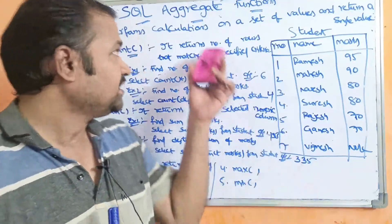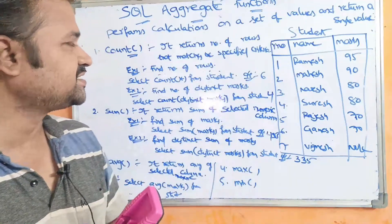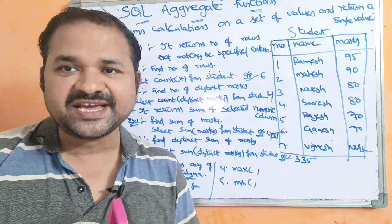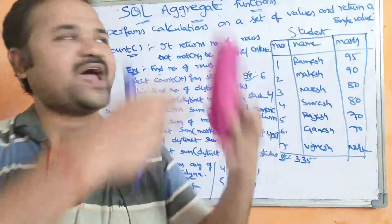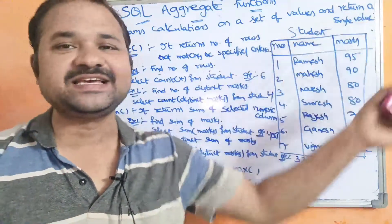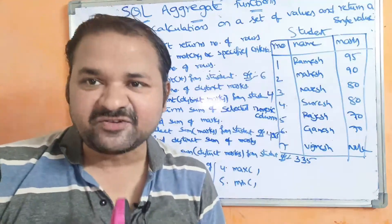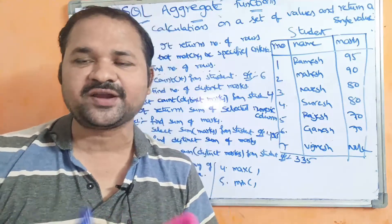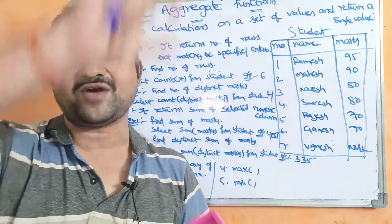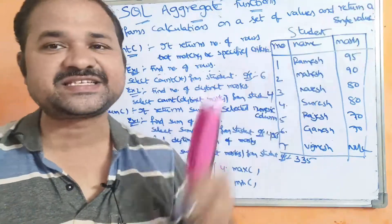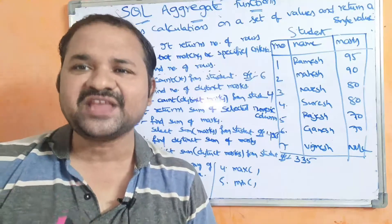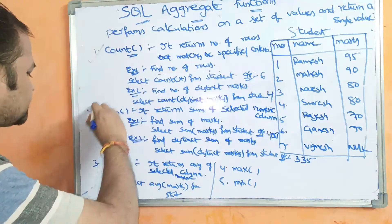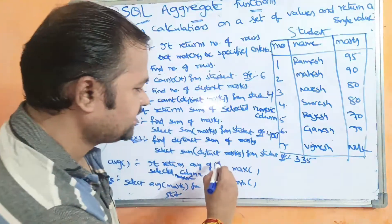Now let us discuss SQL aggregate functions. Aggregate functions perform calculations on a set of values and return a single value. Aggregate means operations are performed on a large number of values and it returns a single value. There are mainly five aggregate functions: count, sum, average, max, and min.